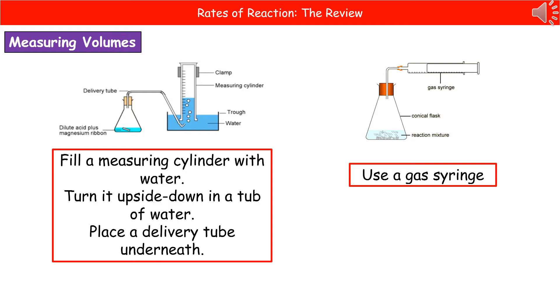So a gas syringe is just a piece of equipment, it's glass usually, and therefore you may not have been allowed to use it if your school's only got a few because they're quite expensive. And what happens once it's connected in, as the gas is formed, it pushes the plunger out and then you can read the volume off the side.